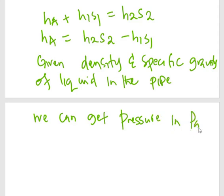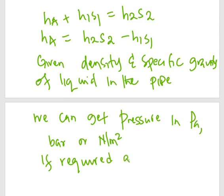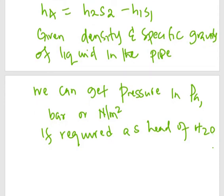Given the density and specific gravity of the liquid in the pipe, we can get the pressure in pascals, in bars, or in newtons per square meter. If the pressure is required as head of water, then retain h_A in meters.